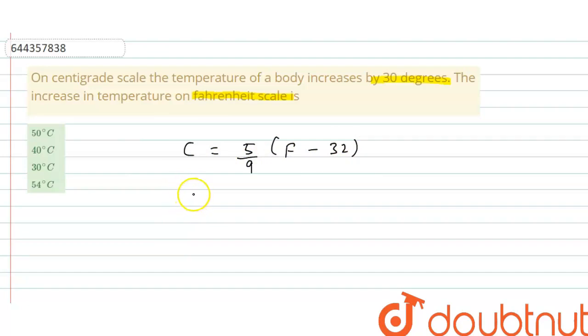C1 equals 5 upon 9 times (F1 minus 32), and if temperature in degree Celsius is C2, then C2 equals 5 upon 9 times (F2 minus 32). So this is equation 1, this is equation 2.